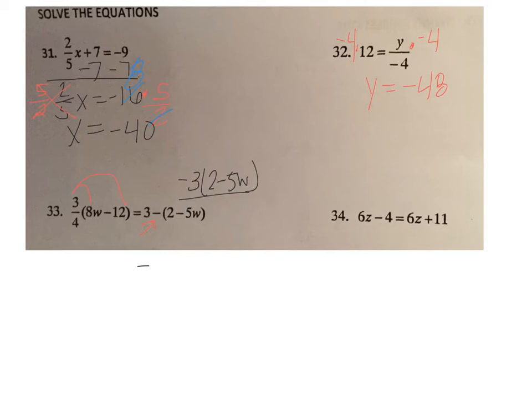So on this side of the equation, we're going to get 3 minus 2 minus 5w. Is it minus? No, I forgot to distribute the negative, so it should be plus 5w. Now we're going to multiply 3/4 times 8w over 1, and 4 goes into 8 twice, 3 times 2 is 6w, and then 3/4 times 12 over 1. 4 goes into 12 three times, 3 times 3 is 9, so minus 9.